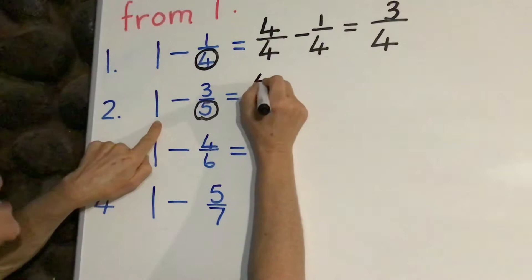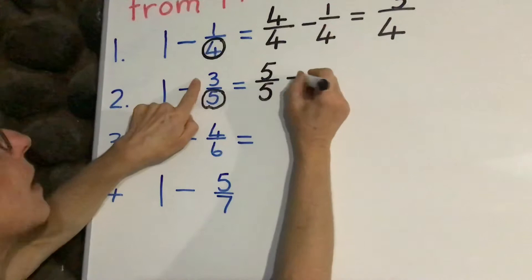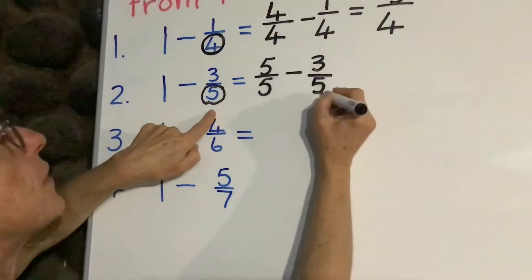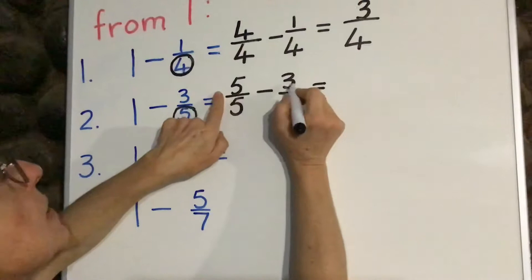But now we're going to minus three fifths. Five fifths minus three fifths, so we say five minus three is two. Remember the denominator stays the same.